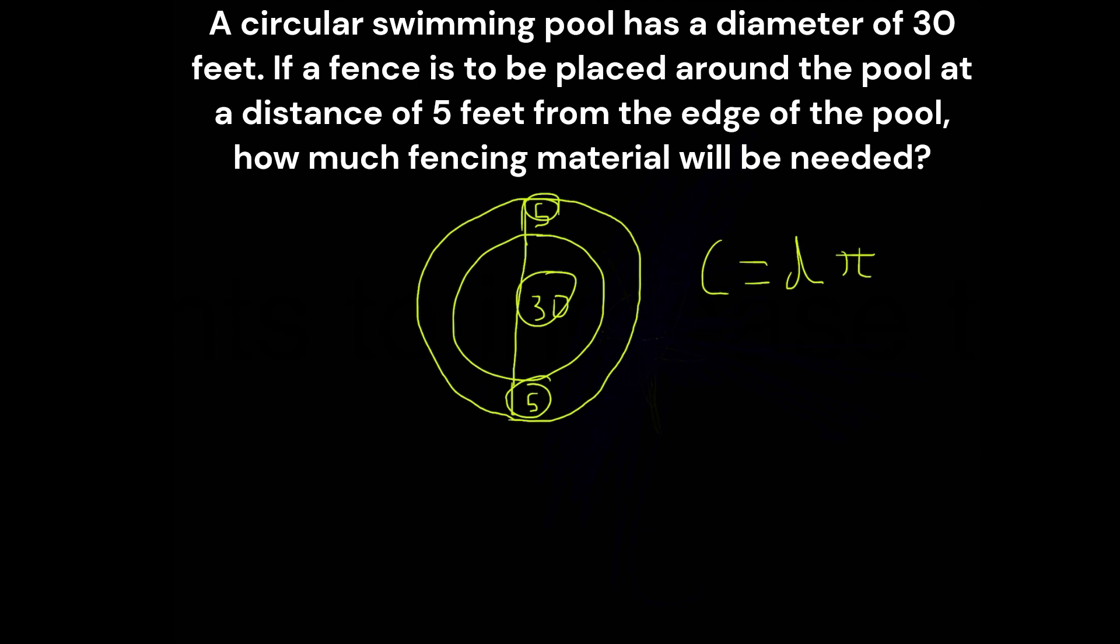So now let's simply add these three numbers up, 5 plus 30 plus 5. And this is going to give us 40.